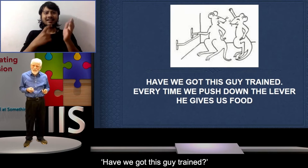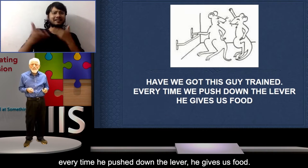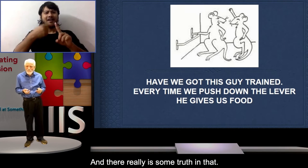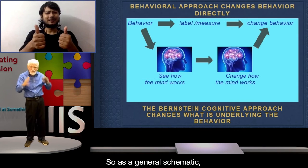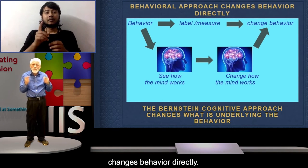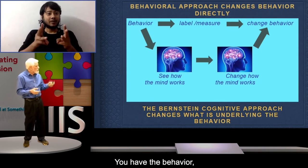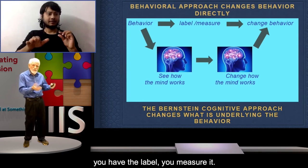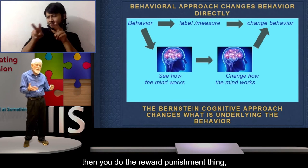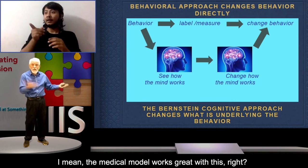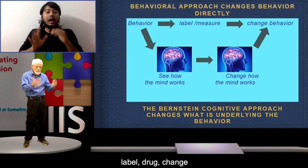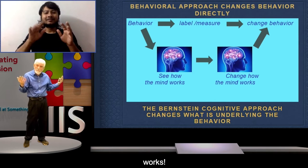There's a joke from outside my university professor's door — I went to a behavioral school. One rat says to another, imagining the graduate student putting pellets down every time he presses the bar: 'Have we got this guy trained? Every time he pushes down the lever, he gives us food.' As a general schematic, the behavioral approach changes behavior directly: you have the behavior, you label it, you measure it, do the reward-punishment thing, and you change behavior. The medical model works great with this — you have a diagnosis, a label, a drug, change. Works.